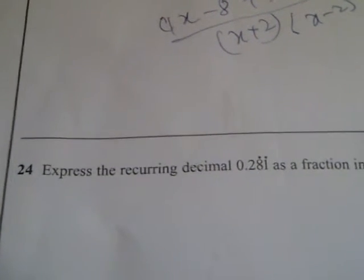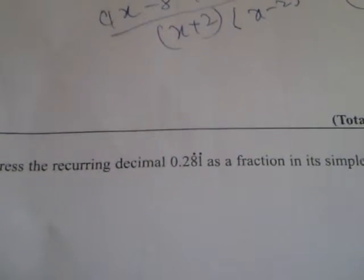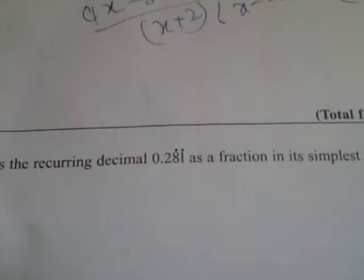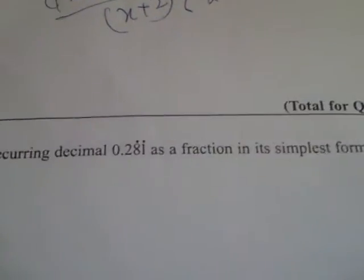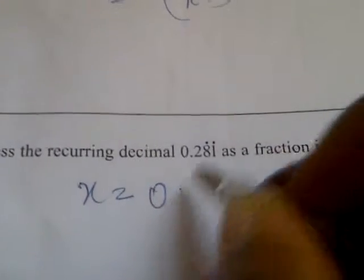Now question 24 says express the recurring decimal 0.281 as a fraction in its simplest form. Now you have x equal to zero point.